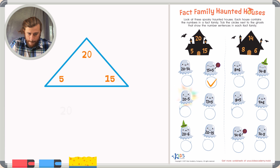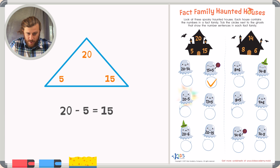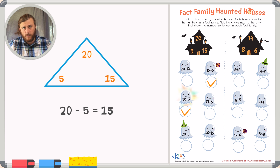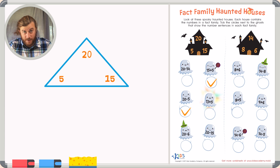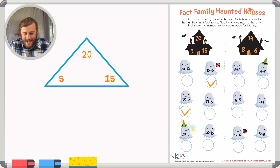Let's check the next one: 20 minus 5. I see that these numbers also belong inside my fact family, but let's do the subtraction just to make sure. 20, 19, 18, 17, 16, 15. So 20 minus 5 is 15 — that's our other number inside the fact family, so 20 minus 5 belongs. Now 13 plus 5: the number 13 does not belong inside my fact family, so that's not correct. And 20 minus 6: the number 6 is not a 20, a 5, or a 15, so this does not belong inside my fact family either.